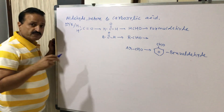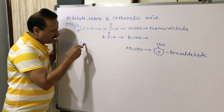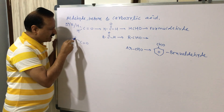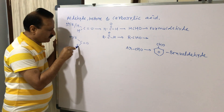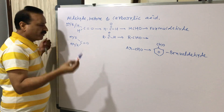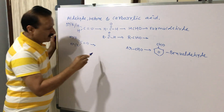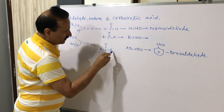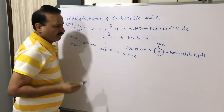Now we are going to discuss how we can form Ketone. In the same way, Carbon has a double bond with Oxygen. One valence of Carbon is satisfied by R or Ar, and another valence of Carbon is also satisfied by R or Ar. The formula becomes R-C(=O)-R, which is Ketone.